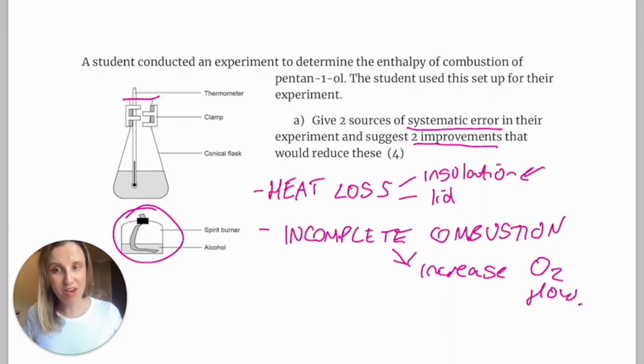Nothing that's going to make it perfect, just something that's going to make it that little bit better. You could suggest to do this experiment in an actual calorimeter, like a copper calorimeter versus a conical flask. That would make a big difference. It doesn't need to be something major. Just suggest something and make sure that your two systematic errors are different from each other.